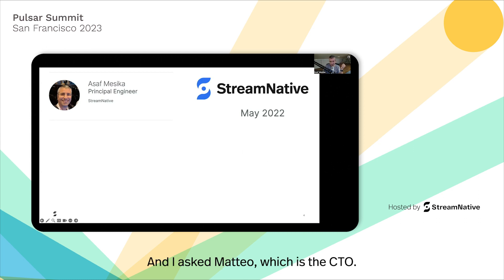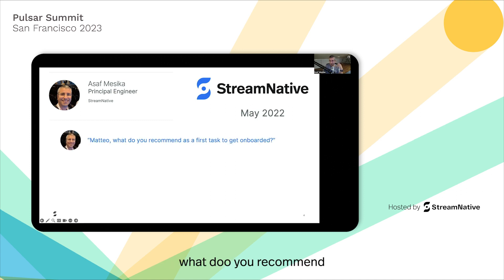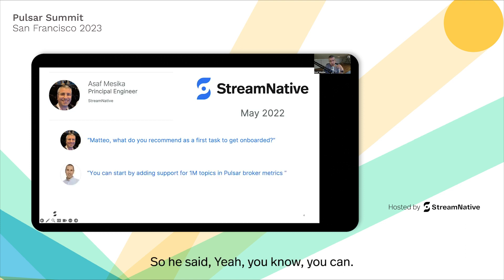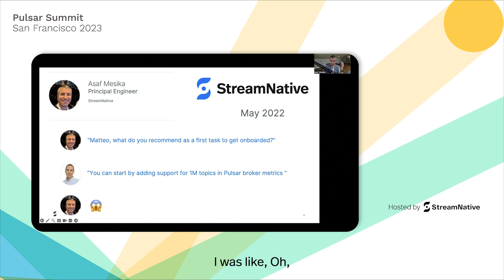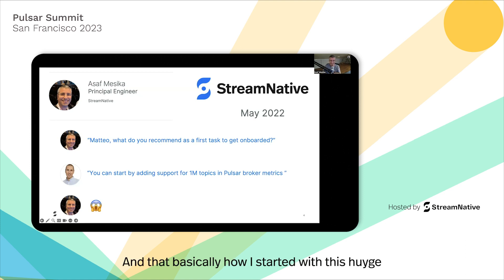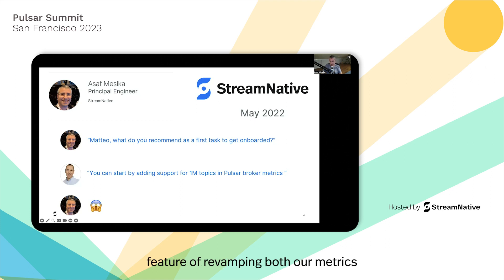I asked Matteo, who is the CTO — you can see him in the crowd right now — I said, Matteo, what do you recommend as a first task to get onboarded? Something small. He said, how about starting by adding support for 1 million topics in Pulsar Broker metrics? After he described the problem a bit more, I was like, oh, that's a mega saga. But yeah, I can start with that. And that's basically how I started with this huge feature of revamping Pulsar metrics.